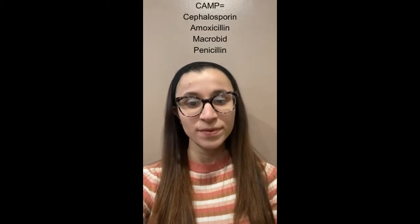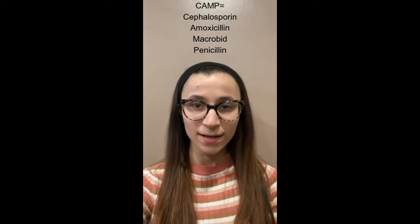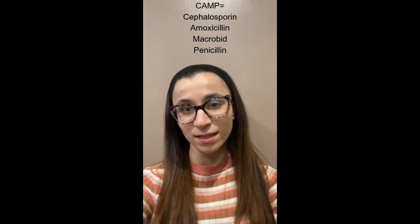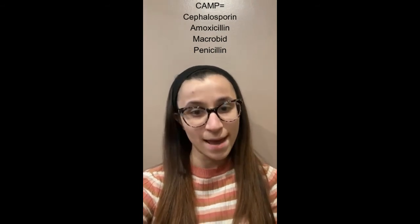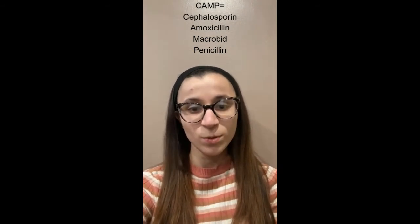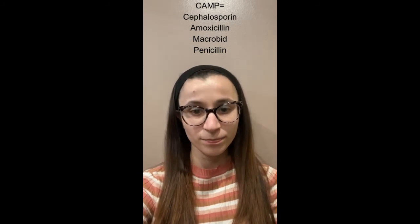Now here are some random medication mnemonics. If someone has a UTI in pregnancy, the mnemonic is CAMP: C for Cephalosporin, A for Amoxicillin, M for Macrobid, and P for Penicillin — which is also Amoxicillin, but it helps you remember the mnemonic. So CAMP: Cephalosporin, Amoxicillin, Macrobid, and Penicillin.